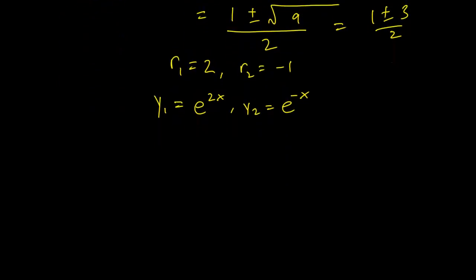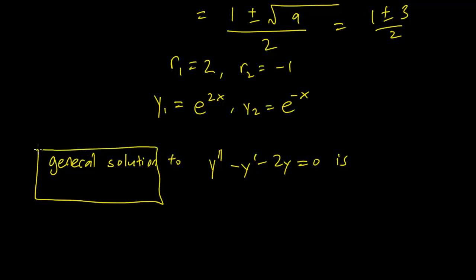And our general solution to the differential equation y double prime minus y prime minus 2y equals 0 is, boxing the general solution, it's going to be y equals the first parameter c1 e^(2x) plus c2 e^(-x). And if the problem just asks for a general solution, that's enough.